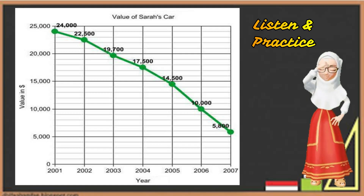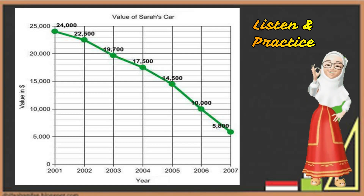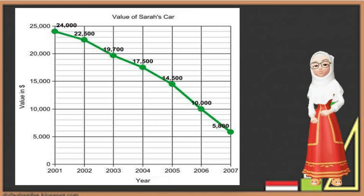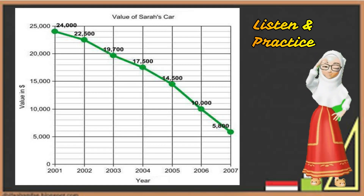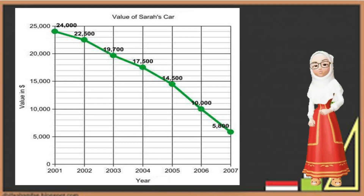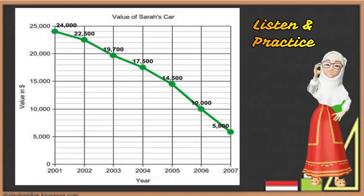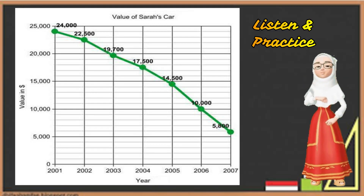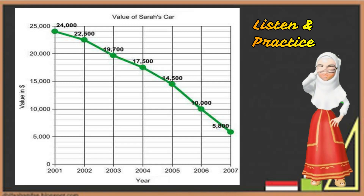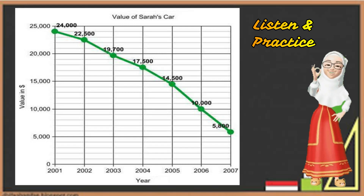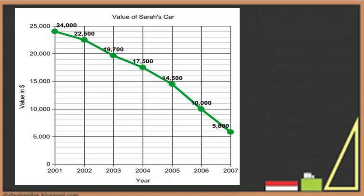In general, we can see from the graph that the value of the car decreased every year. The value of the car decreased sharply from 2005 to 2006. Furthermore, from 2001 to 2002, the value of my car went down slightly. The reducing value from 2002 to 2003 was lower than the reduction from 2005 to 2006.